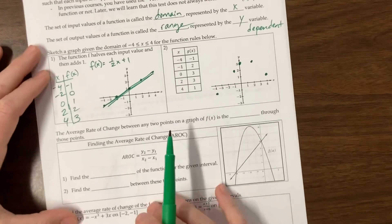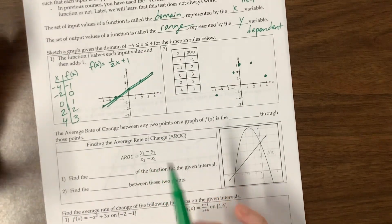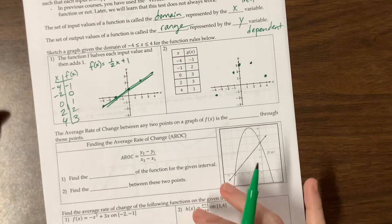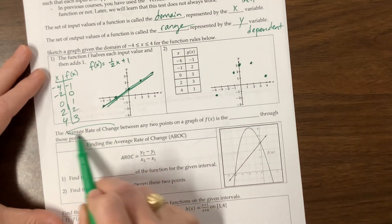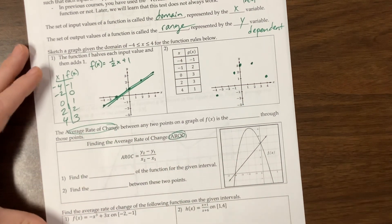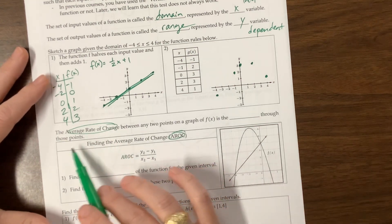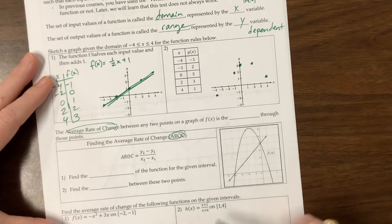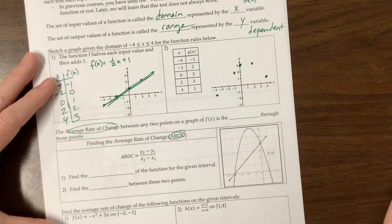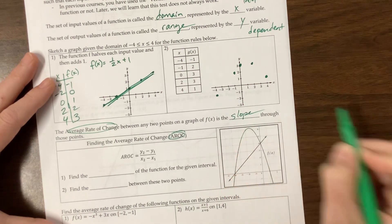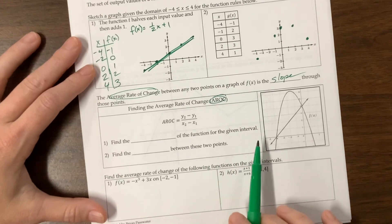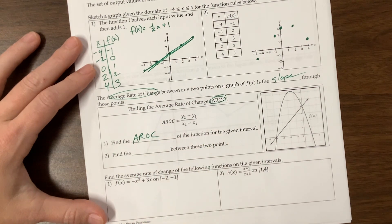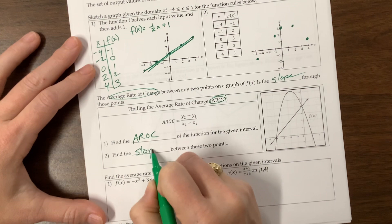Okay, the average rate of change. Now this is one thing that's new to me in the AP world. Not that average rate of change is new to me, but I've never emphasized it in my previous pre-cal classes as much as they're emphasizing it now. So they like to call the average rate of change the AROC, and I saw that when I went to the AP training this summer. So the average rate of change between any two points on a graph is the slope of the secant line through those points. Okay, find the average rate of change of the function for the given interval. So that's like finding the slope between those two points.